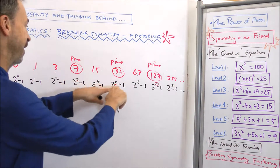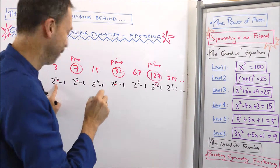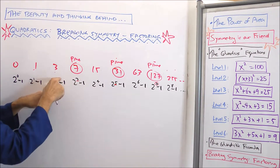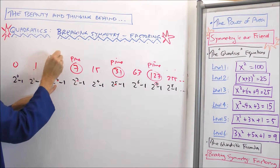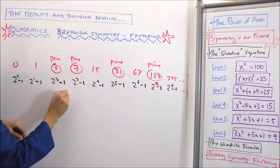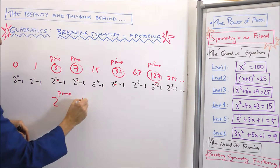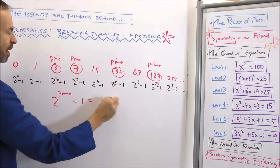Looking at primes 3, 5, 7, and going down to 2 — 2 is a prime number, the only even prime — 2 squared minus 1 is 3, it's prime. So it looks like 2 to the prime minus 1 is always prime.